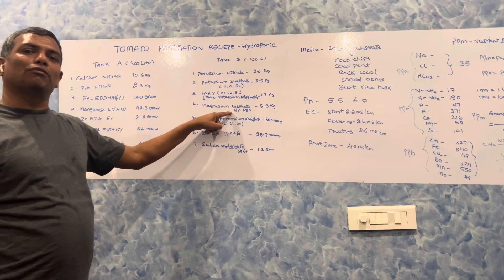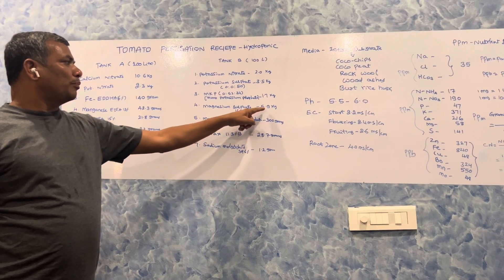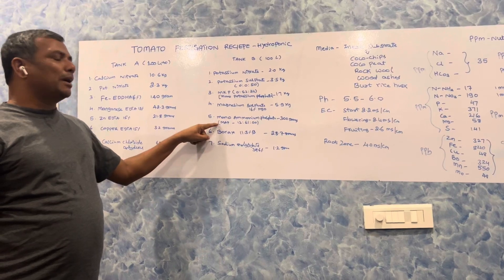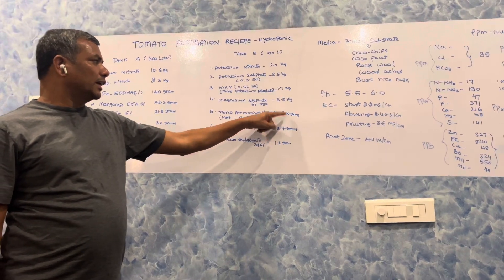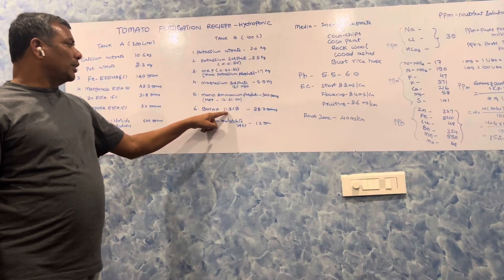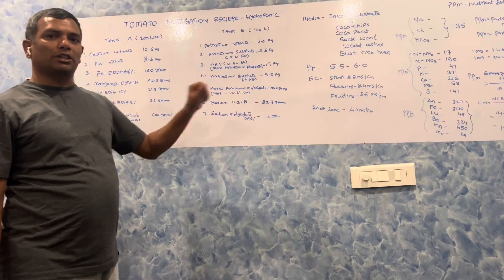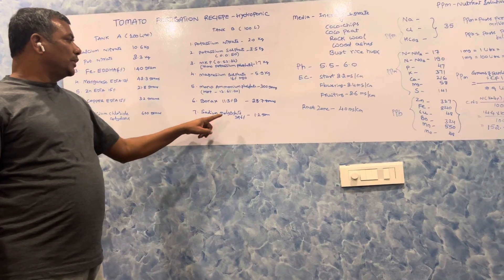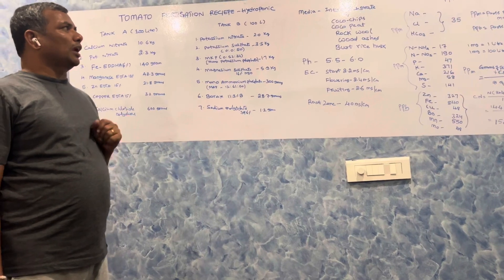Mono ammonium phosphate (MAP) 12-61-0, 300 grams, borax 11.3% boron, 28.7 grams, and sodium molybdate 39.6%, 1.2 grams.